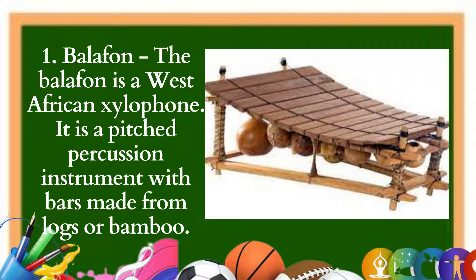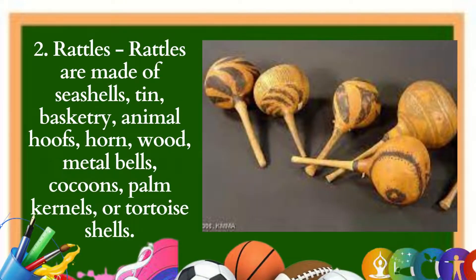2. Rattles: Rattles are made of seashells, tin, basketry, animal hoofs, horn, wood, metal bells, cocoons, palm kernels, or tortoise shells. These rattling vessels may range from single to several objects that are either joined or suspended in such a way that they hit each other.